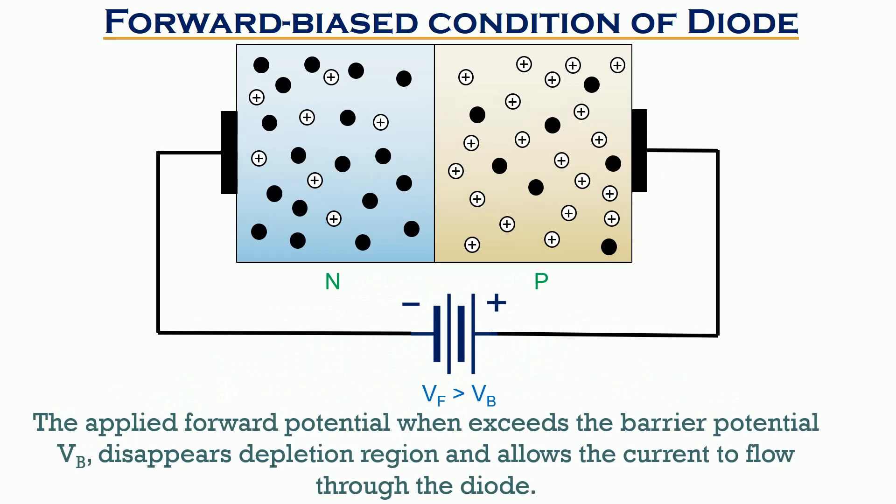In the forward biased condition, the positive potential of the battery applies repulsive force to the holes present in the P side. Similarly, the electrons in the N side experience a repulsive force by the action of negative potential of the battery.